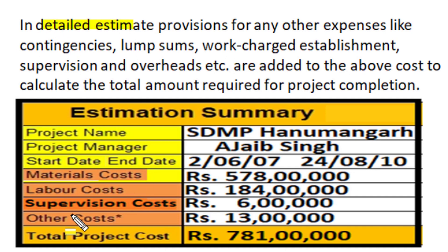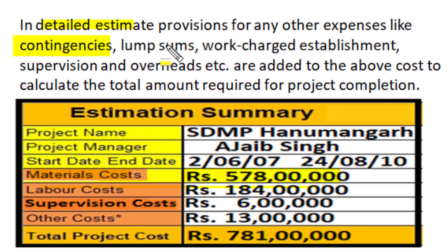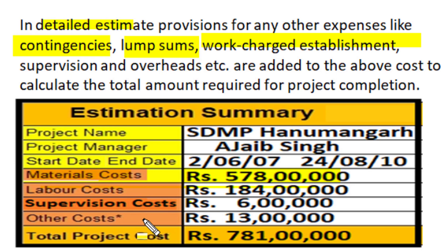In detailed estimate, apart from material cost and labor cost, we make provision for other expenses like unexpected contingency charges, some lump sum cost components, cost of work charge establishment and supervision, and overhead on the project. Supervision and other costs are added along with material and labor costs, and that will give us the total project cost.